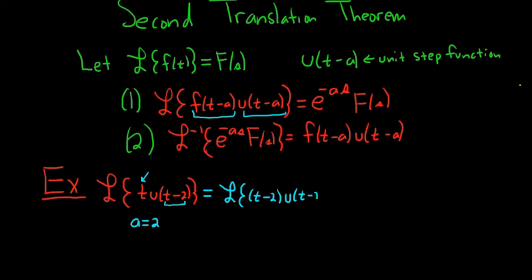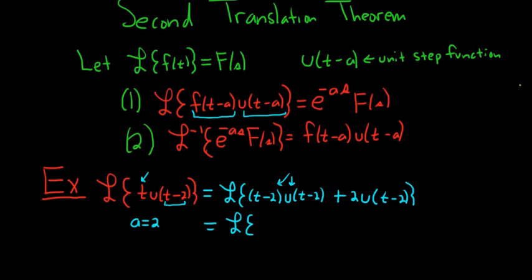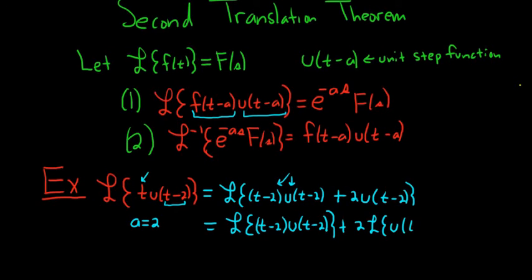So what we do is we make it t minus 2. Really what we've done is added a negative 2, so we have to take it away — plus 2 times the unit step of t minus 2. Now we can break it up: this is the Laplace transform of (t minus 2) times the unit step of (t minus 2), plus 2 times the Laplace transform of the unit step of t minus 2.